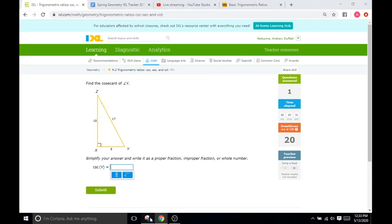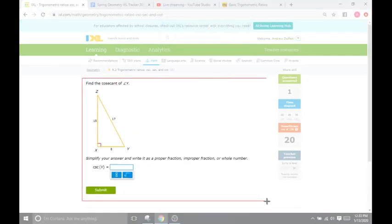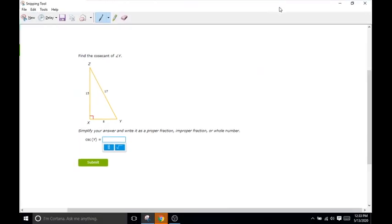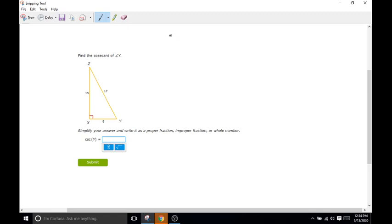Now we have cosecant. Sine is related to cosecant. We have SOHCAHTOA, so sine of X equals the opposite side over the hypotenuse, meaning cosecant is going to be the hypotenuse over the opposite side.